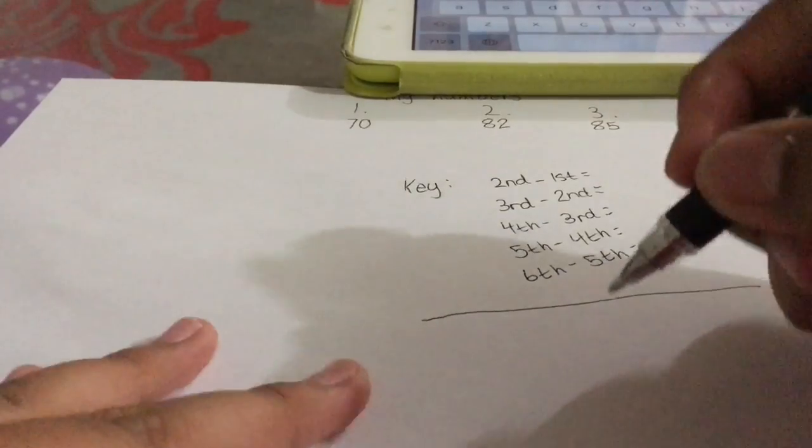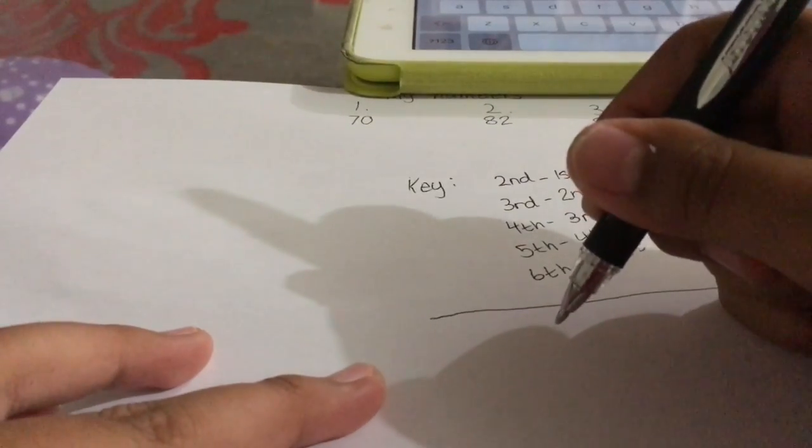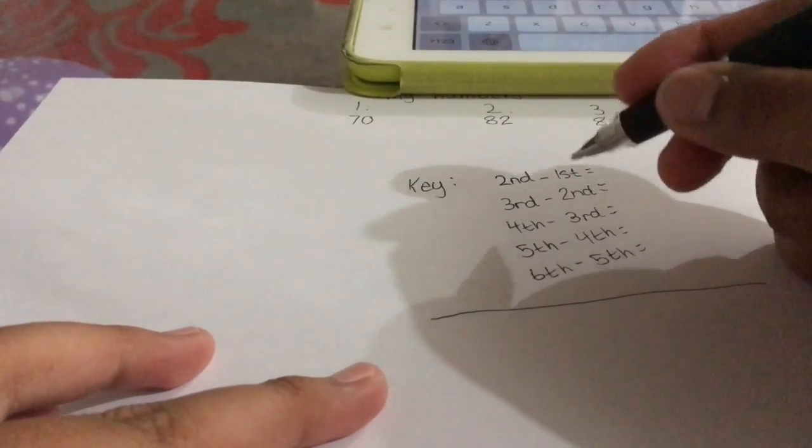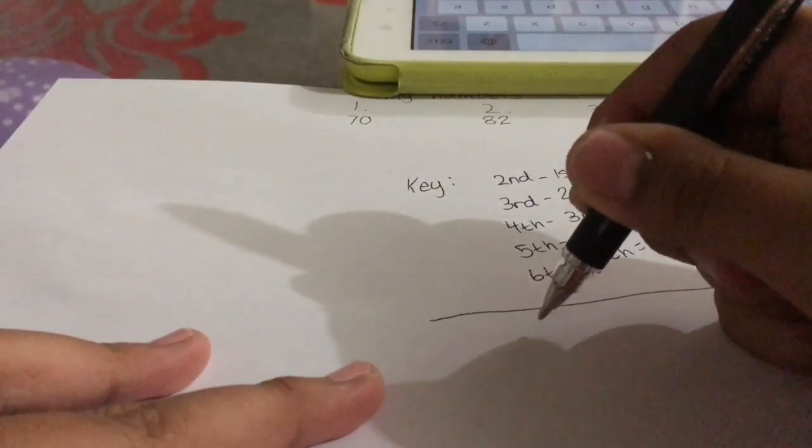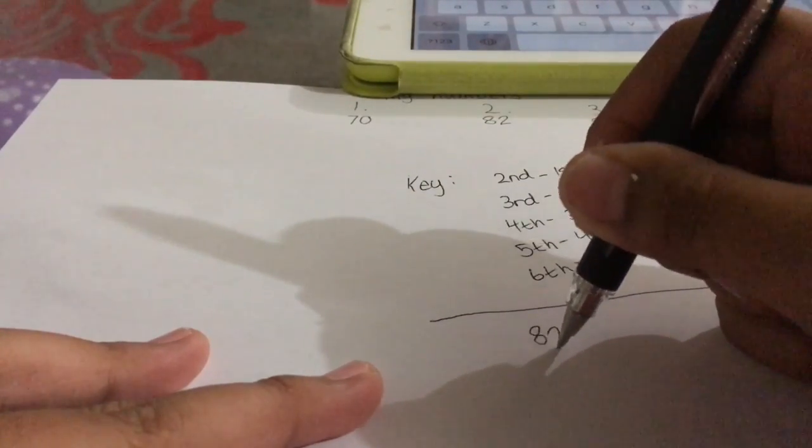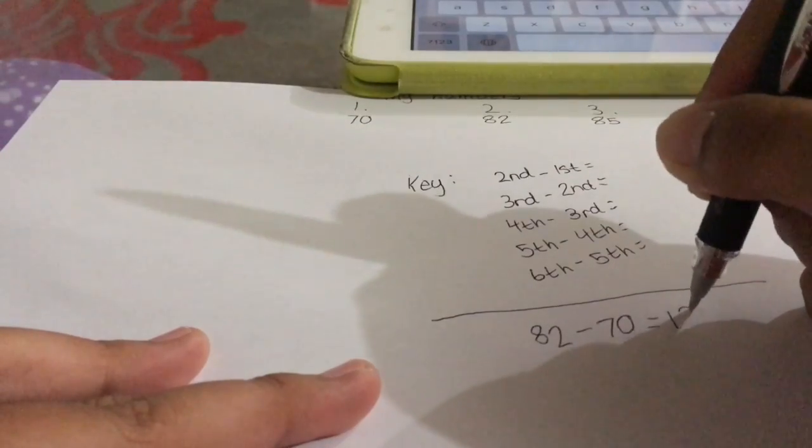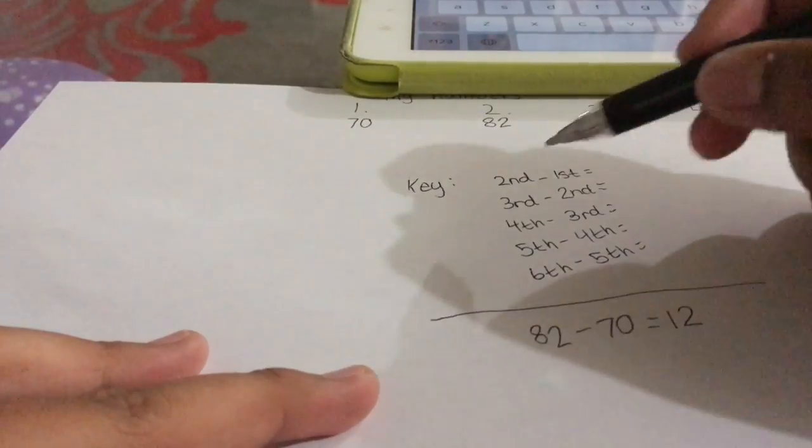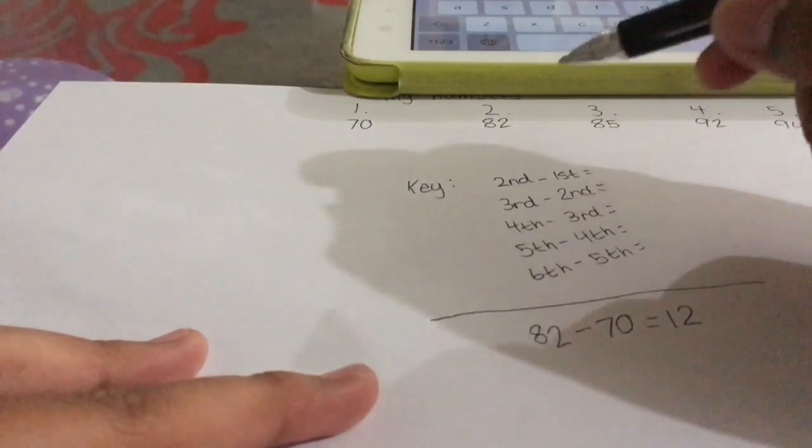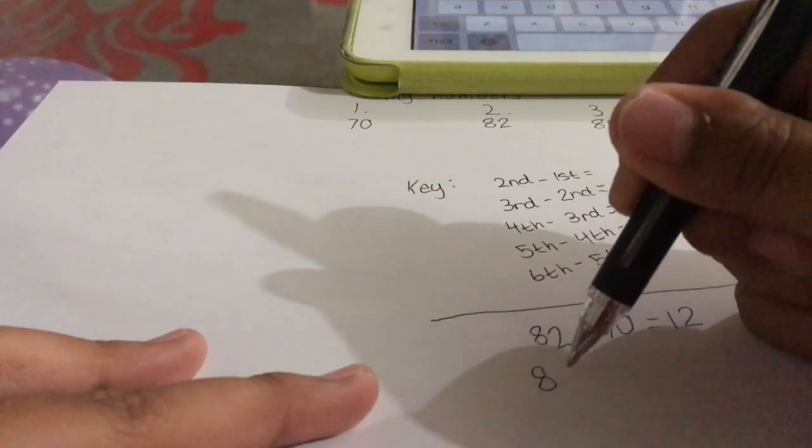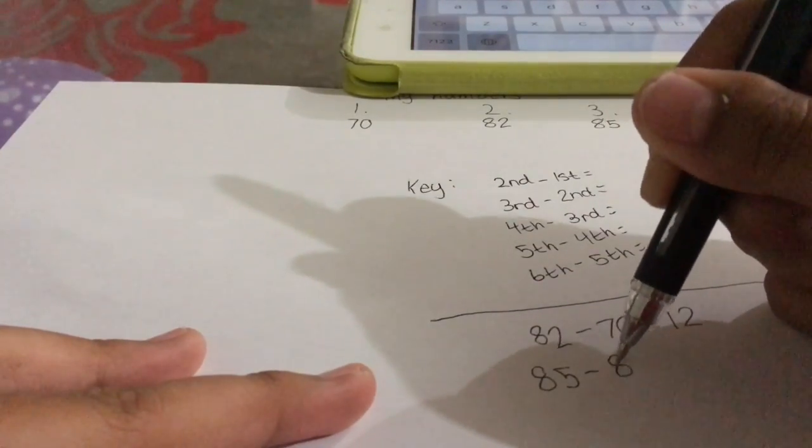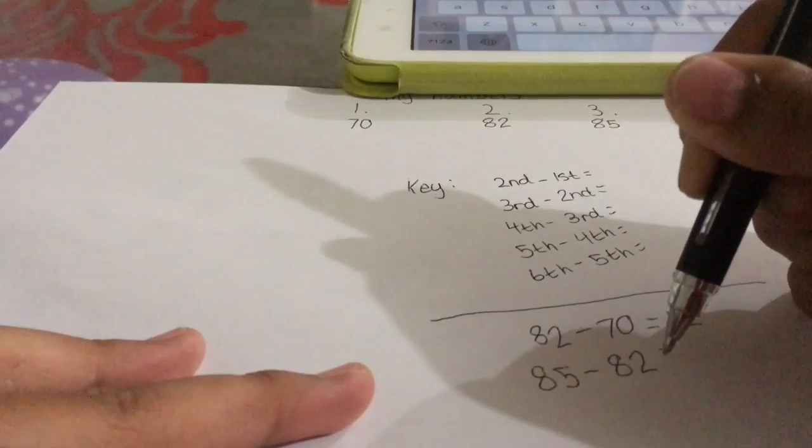So, in my case, the first number would be second number minus the first number. That's 82 minus 70. That's 12. Then the third number minus the second number is 85 minus 82. It's three.